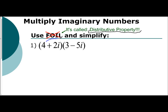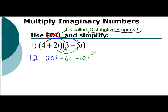So you would do 4 times 3, which is 12. You would do 4 times negative 5i, which is negative 20i. That is the distributive property — this term to each term inside. Then you have to do it to the second term as well: 2i times 3 gives you a positive 6i, and 2i times negative 5i is negative 10i squared. That's why it's just the distributive property — every term in the first parentheses distributed to each term in the second parentheses.